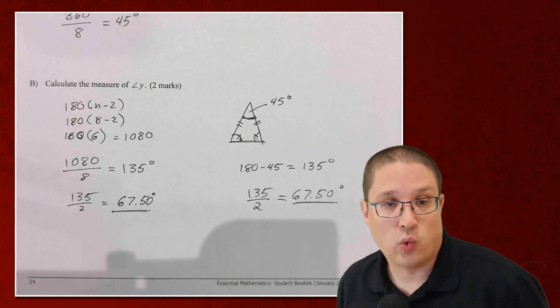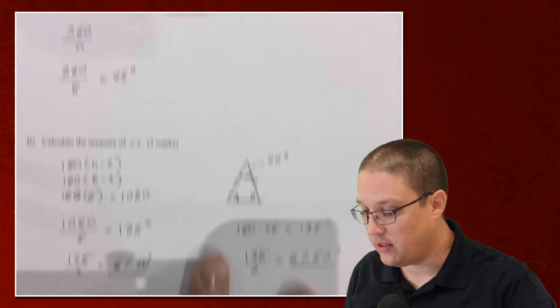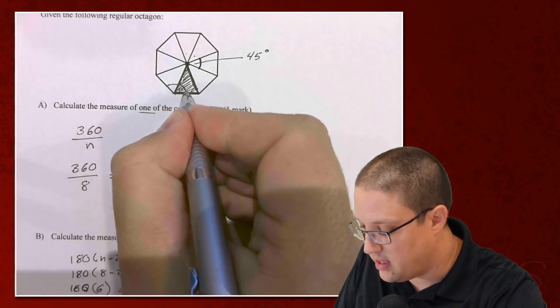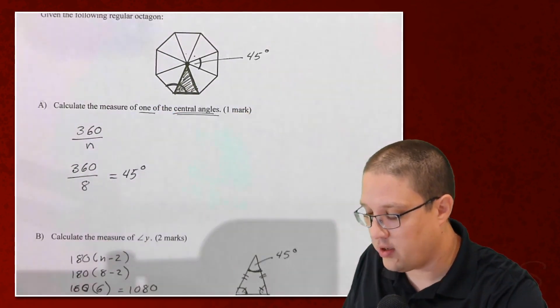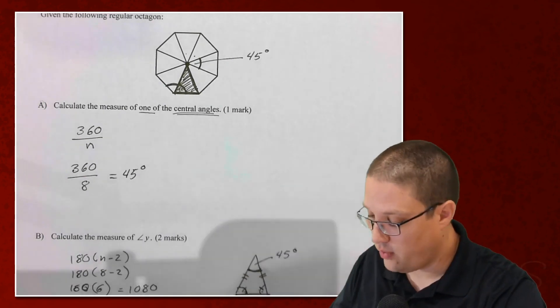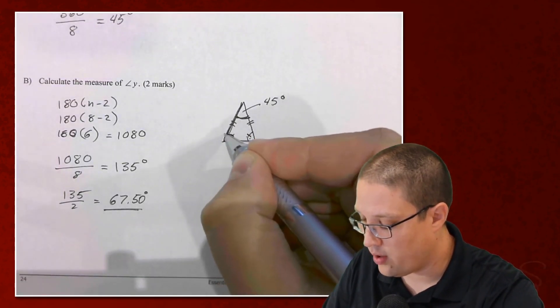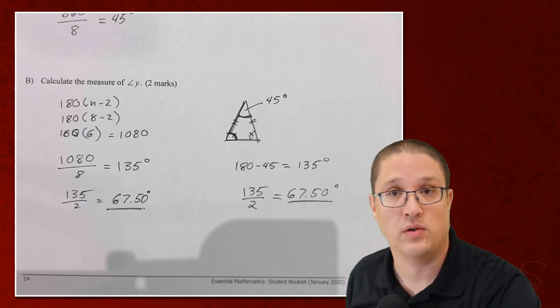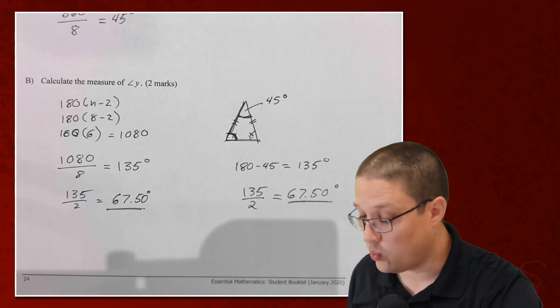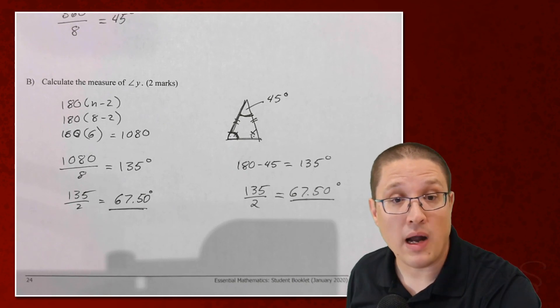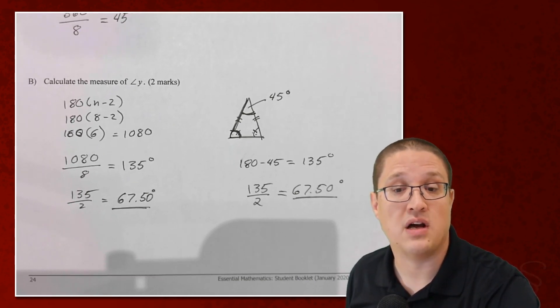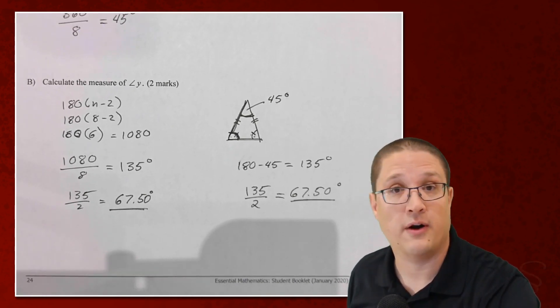Both of these methods work great depending on how you recognize this. Do you recognize that this is an interior angle here and I want half of it? Or do you recognize that I have an isosceles triangle and I want one of the base angles of that? Both of these work great. And you're combining a couple of different properties of polygons that you know here. Have a great day.